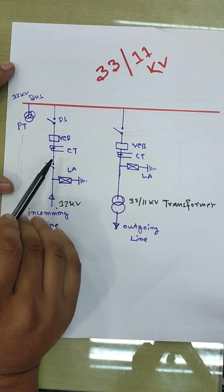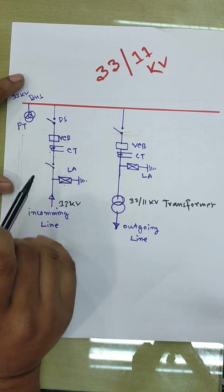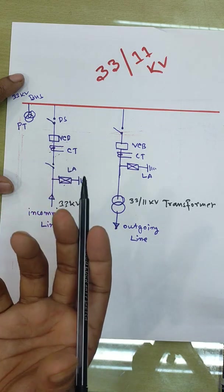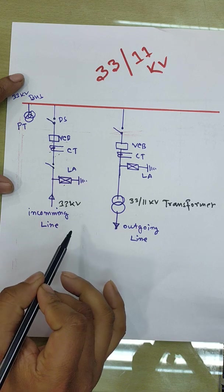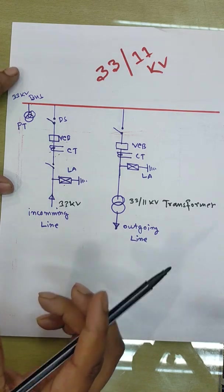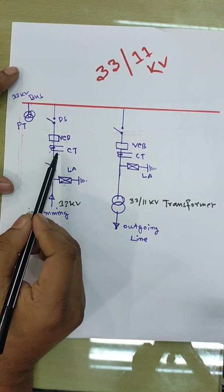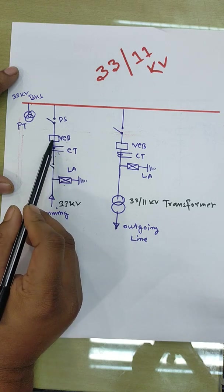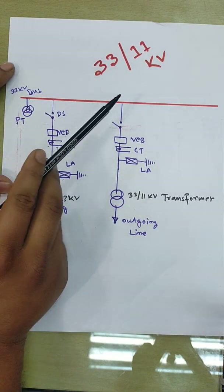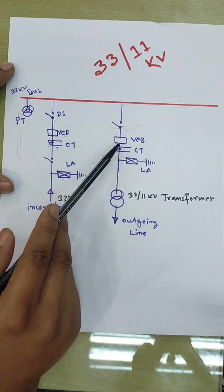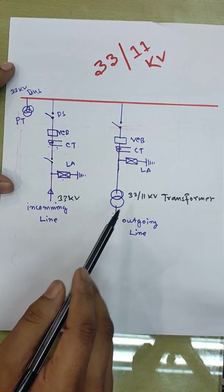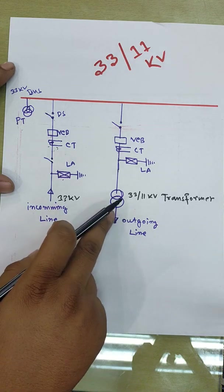Then we use a CT, and the relay will send a signal to the circuit breaker. So when we switch to the power, the circuit breaker operates. The first breaker is followed by CT, then the lightning arrestor, then the 33 by 11kV transformer, and the outgoing line.